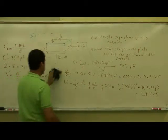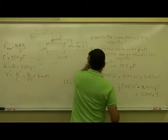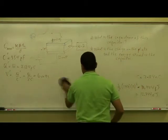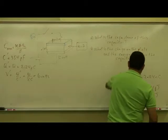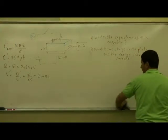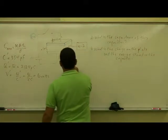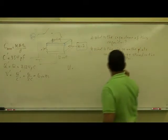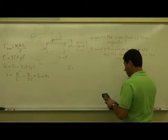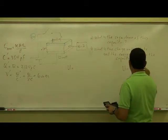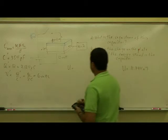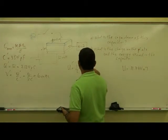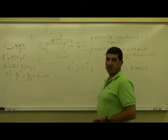So what's the new energy? What's the new potential energy of the capacitor? The old potential energy was 12.744 nanojoules. The new potential energy, half C prime, V prime squared, half. Well, we could do this in terms of ratio. The capacitance has doubled.